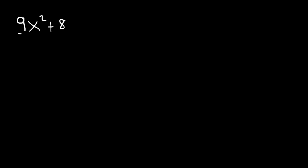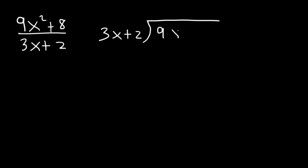This is the last long division problem in this lecture. We're dividing a binomial by another binomial. Put the denominator on the outside and numerator on the inside. Notice that in the numerator we have 9x squared but no middle x term — it's missing — so we must write 0x as a placeholder. Then write plus 8. The 0x part is important; otherwise you might get the wrong answer.